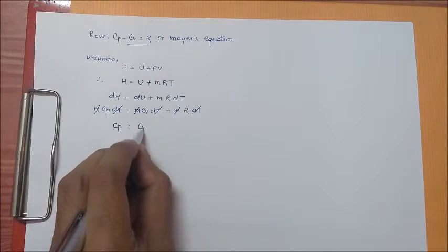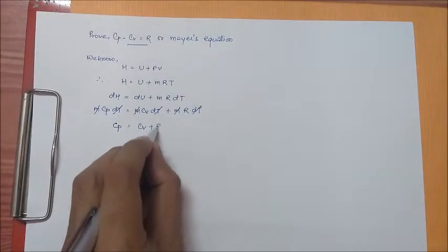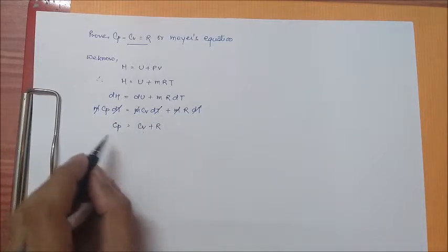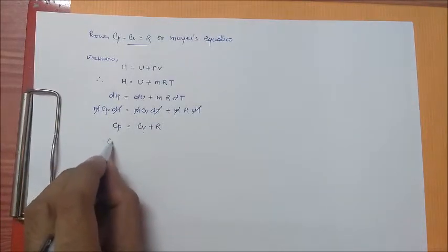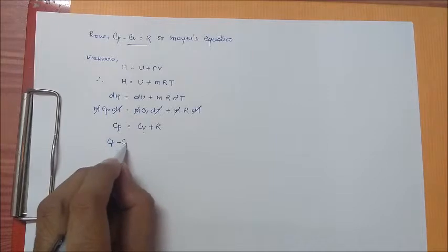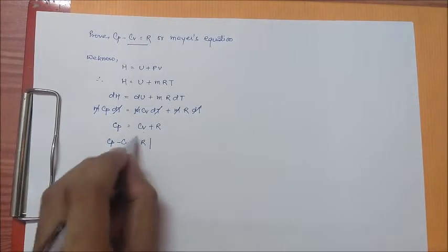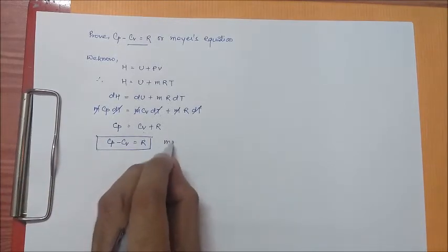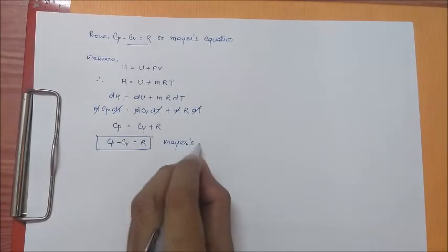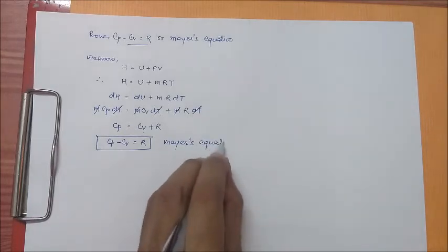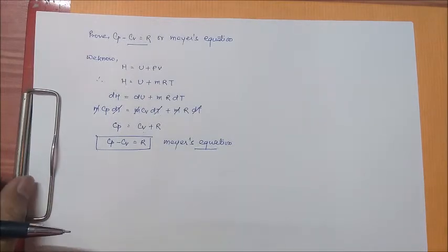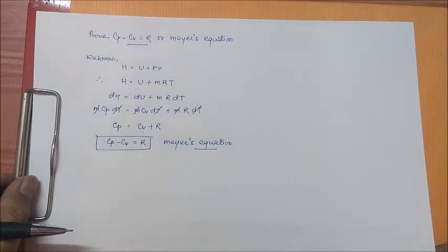Now we can bring this cv on the left hand side, then we get cp minus cv is equal to R. This is what we know as Mayer's equation. And hence we have proved this. It has been asked in various university examinations, so I have shown this thing in this video lecture.